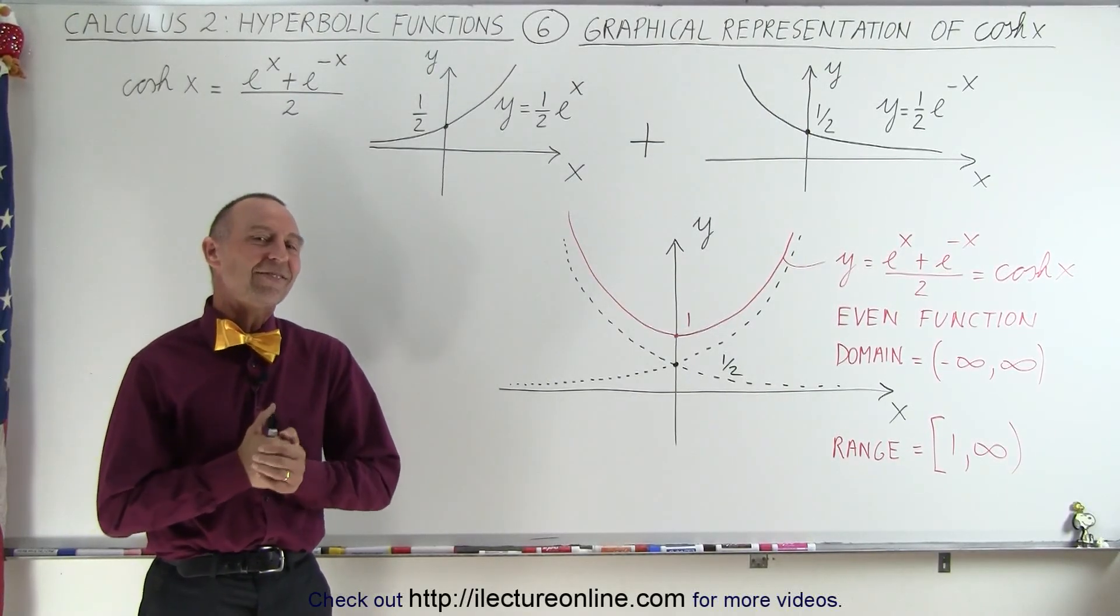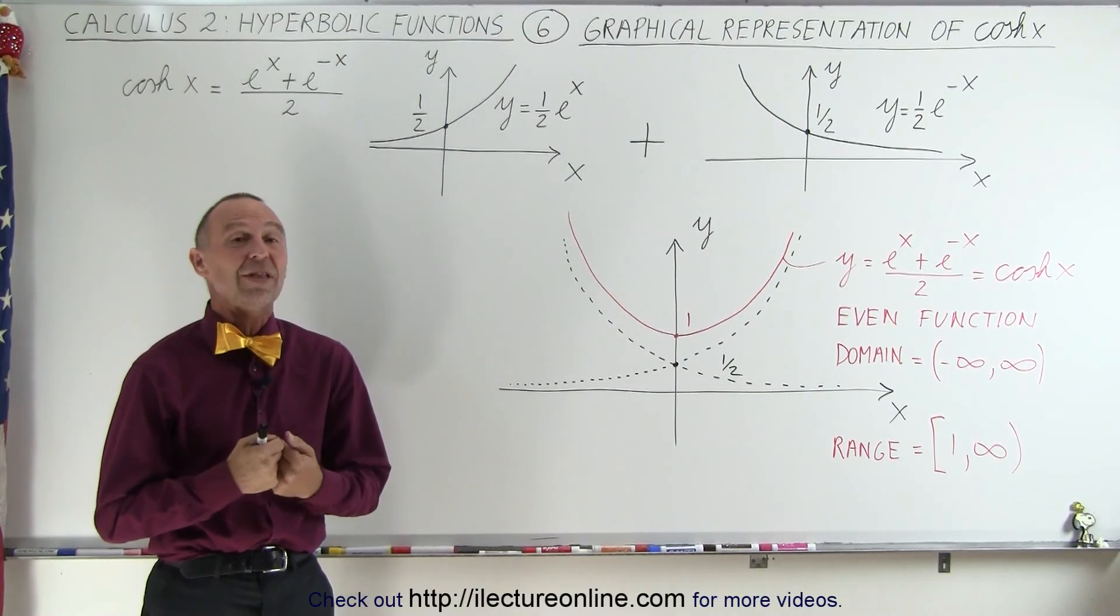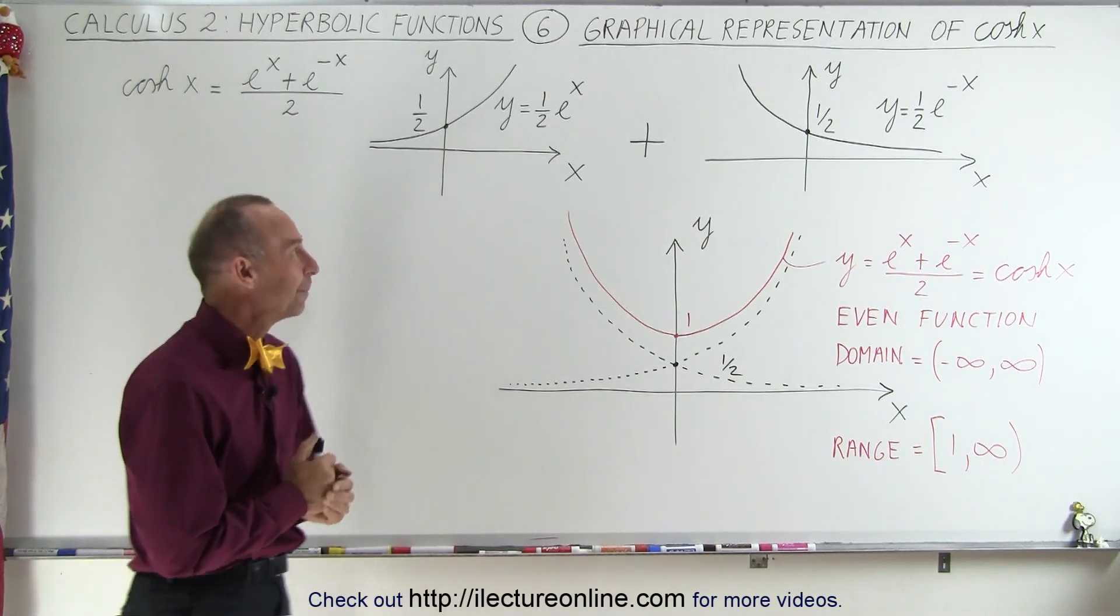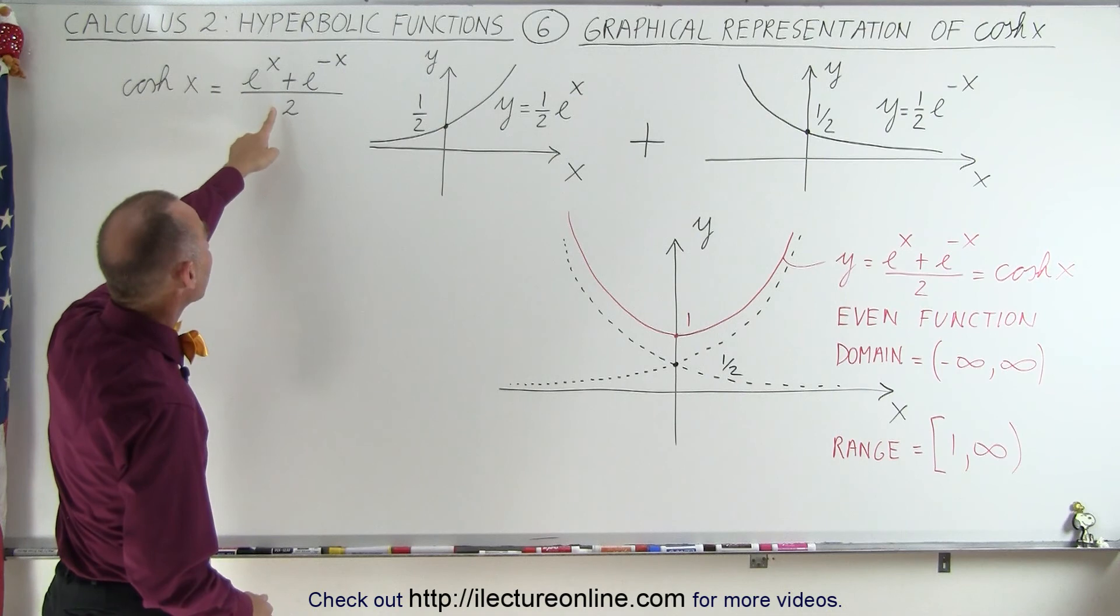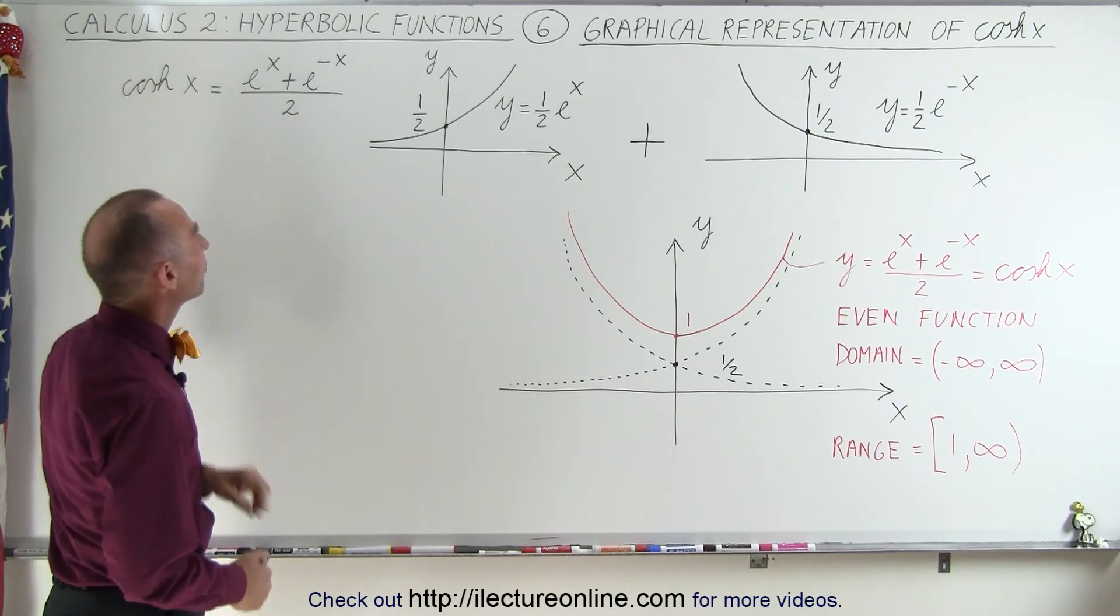Welcome to our lecture online. Now let's take a look at the graphical representation of the hyperbolic cosine. We now know that the hyperbolic cosine of x can be defined as e to the x plus e to the minus x divided by 2.